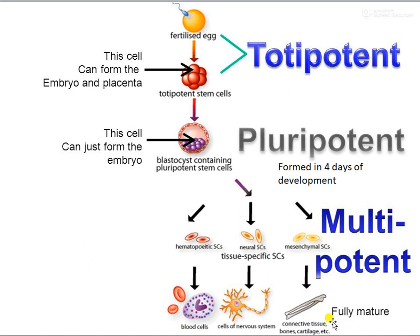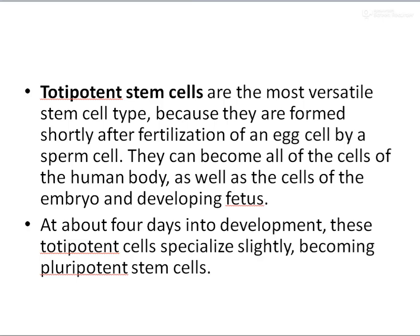The hematopoietic or blood-related stem cells will give rise to the formation of RBC, WBC, and so on — that is how hematopoiesis happens. The totipotent stem cells are the most versatile stem cell type, formed shortly after fertilization, and can become all cells of the human body. At about 4 days into development, totipotent stem cells specialize slightly and become pluripotent stem cells.